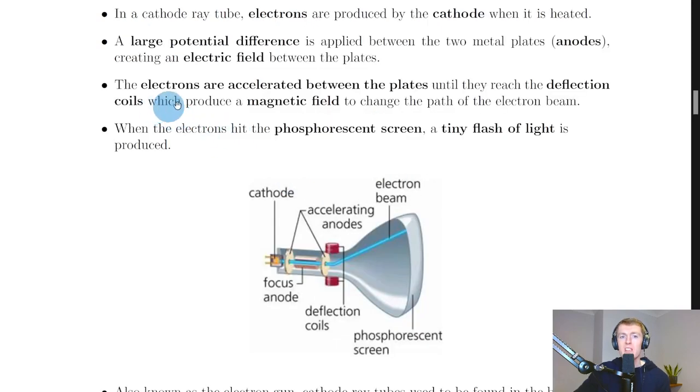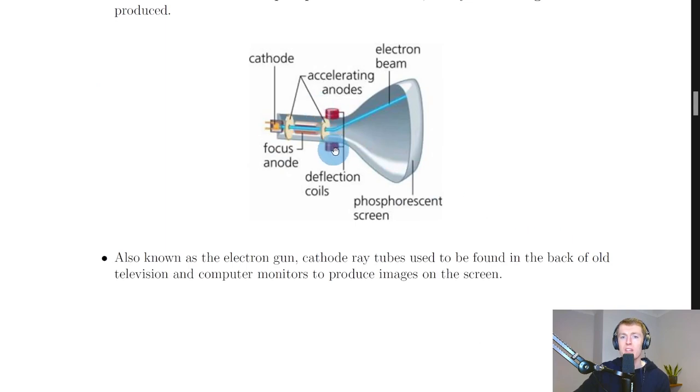The electrons are accelerated between the plates until they reach the deflection coils, which produce a magnetic field to change the path of the electron beam. Here are the deflection coils—the red parts shown on the diagram.